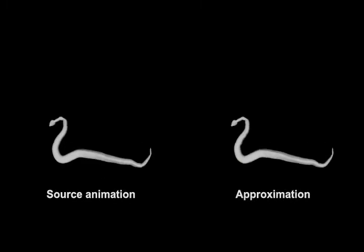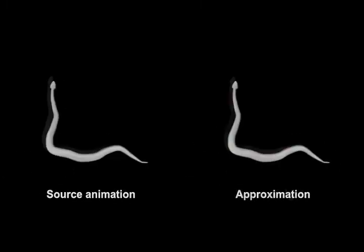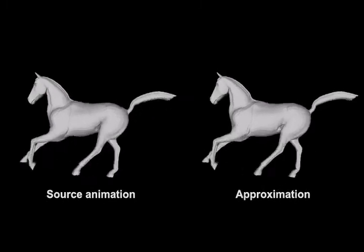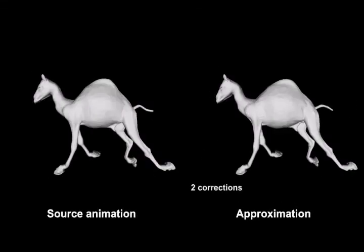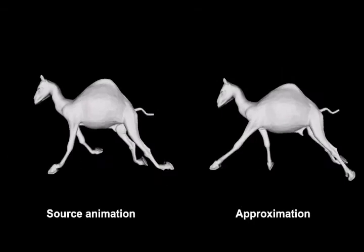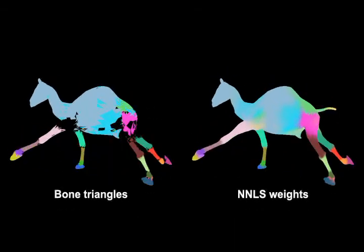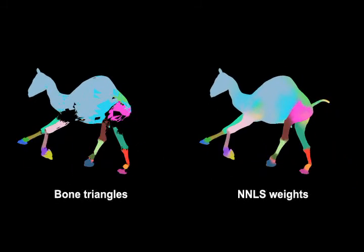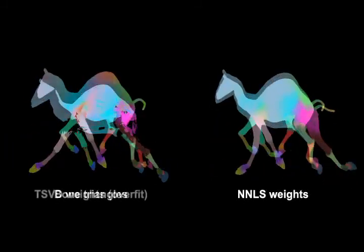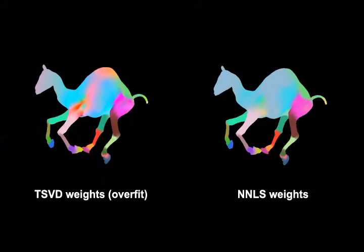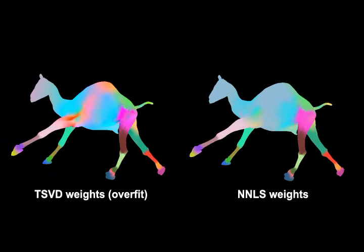The resulting skinned animation approximates the input animation surprisingly well. The results are particularly good for articulated models. By analyzing displacement errors in the rest pose, we can generate an articulated displacement correction model that lets the skin mesh animation converge to the original animation. An important component of our approach is the efficient parameter-free estimation of non-negative vertex weights using non-negative least squares. Non-negative weights avoid very large weight values, or overfitting, that can make the reconstruction of skin mesh animations unstable under small perturbations.